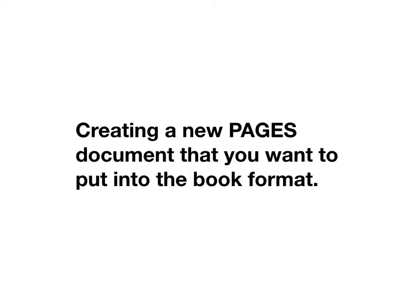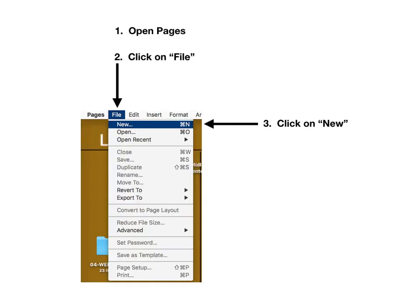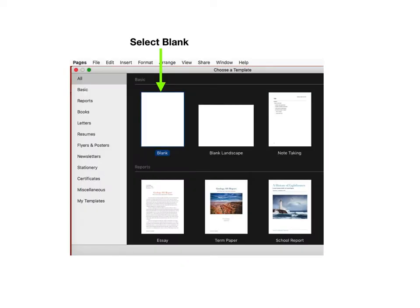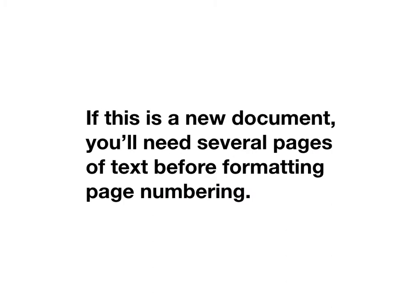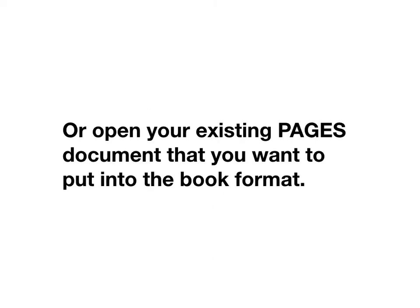The next few slides show how to create a new document. Open Pages software, click on the File tab and then click on the New tab. Choose the blank template. You will need to have text in the new document when setting up page numbering. If you already have a document with text, open it up now.